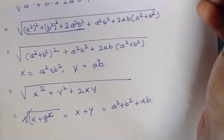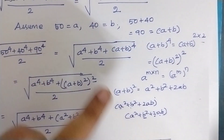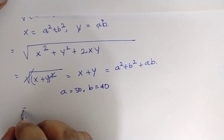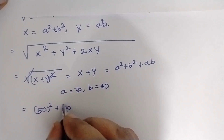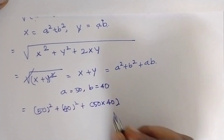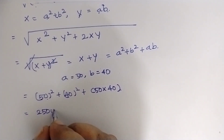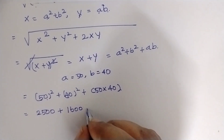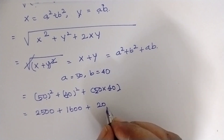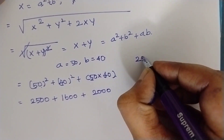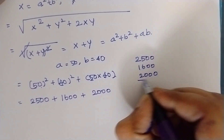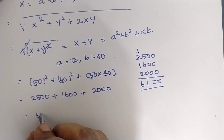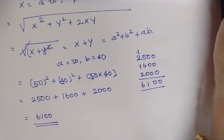Initially we assumed A equals 50 and B equals 40, so substituting: 50 squared plus 40 squared plus 50 times 40. That is 2500 plus 1600 plus 2000. Adding everything together: 2500 plus 1600 plus 2000 equals 6100. Therefore, the answer to the question is 6100.